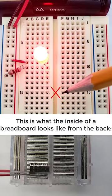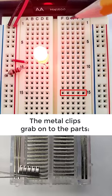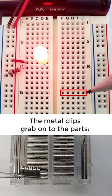Holes are not connected across the gap in the middle of the breadboard, and then these five holes in columns F through J in row 15 are connected.